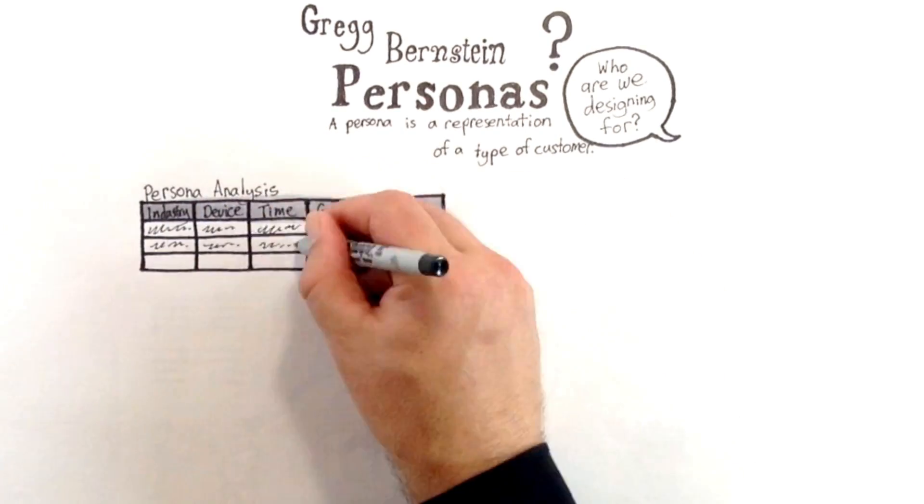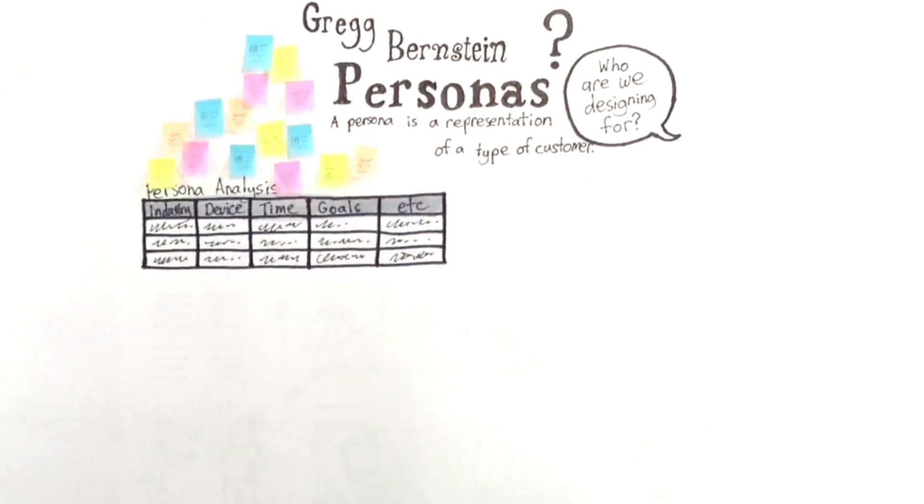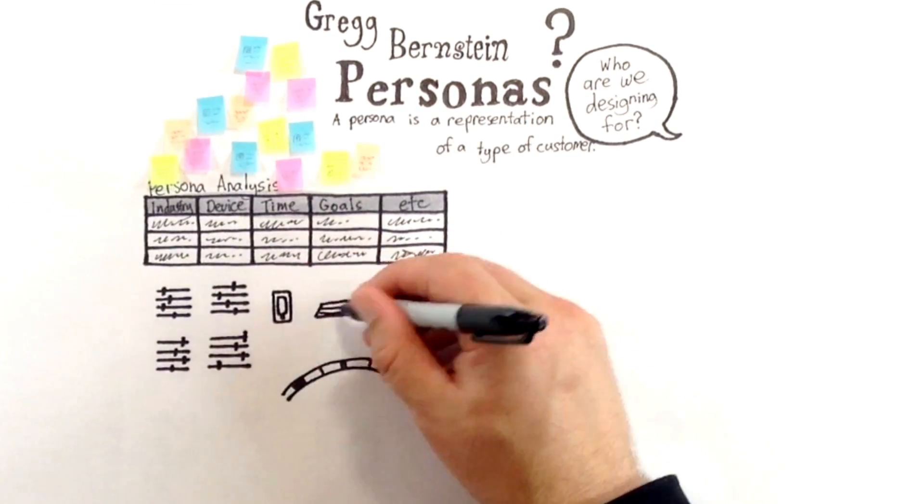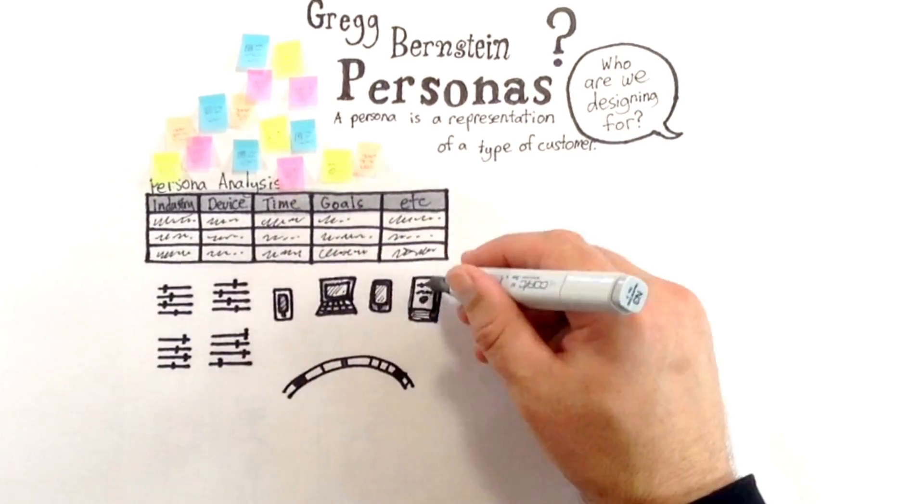Or you could create affinity diagrams by organizing your findings on post-it notes. You might start to see patterns. The industries in which customers work and what devices they use, at what time of day, and where.